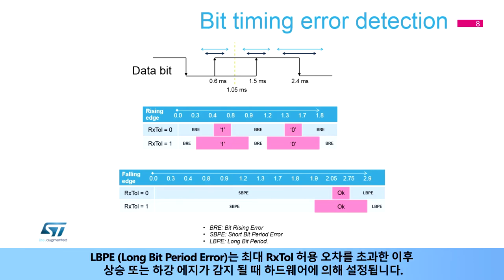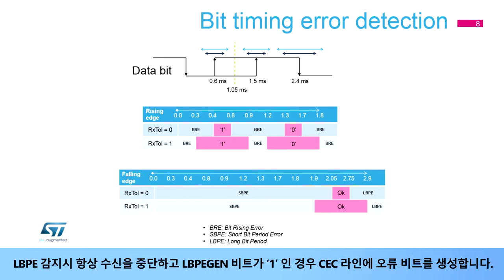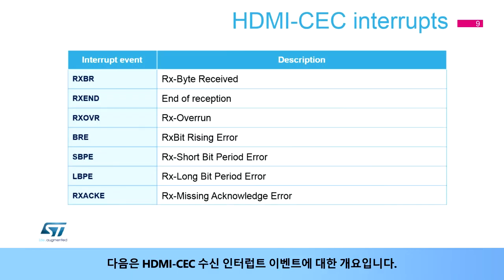A long bit period error or LBPE is set by hardware either when a rising or falling edge is detected after the maximum RxTOL margin. Upon LBPE detection, message reception is always aborted and an error bit is optionally generated on the CEC line if LBPE_GEN is set to 1.